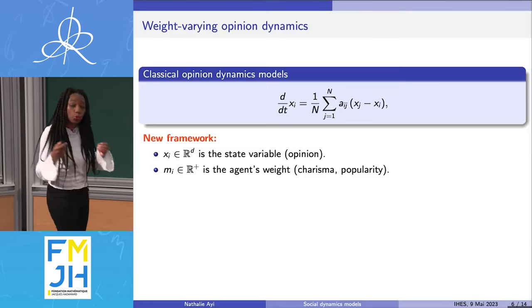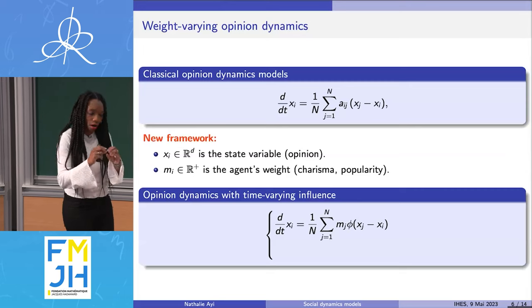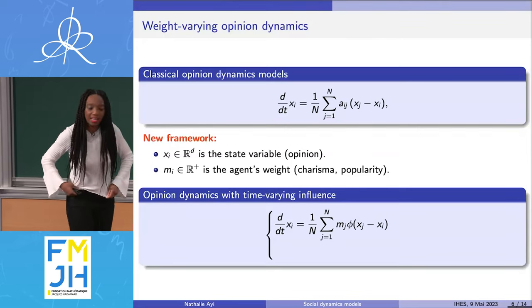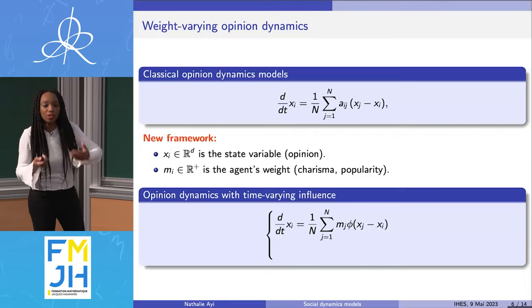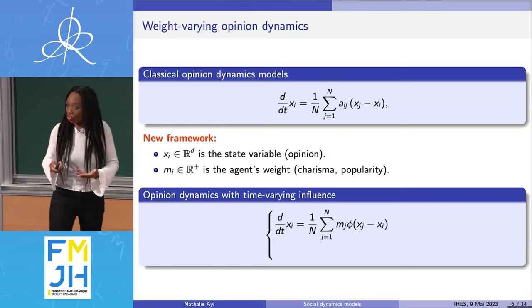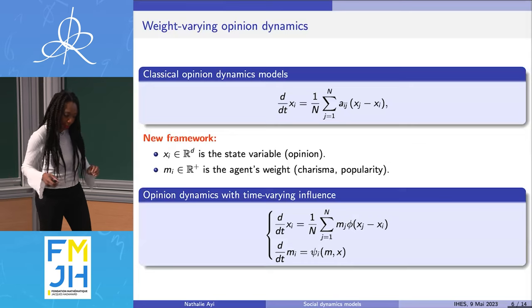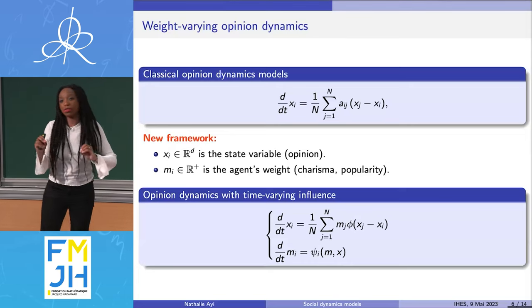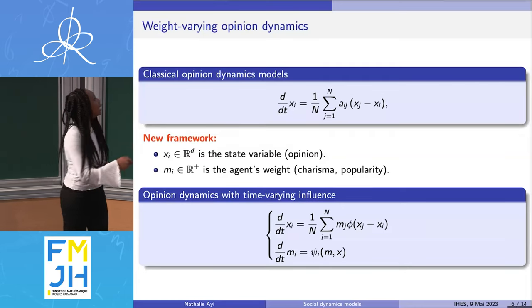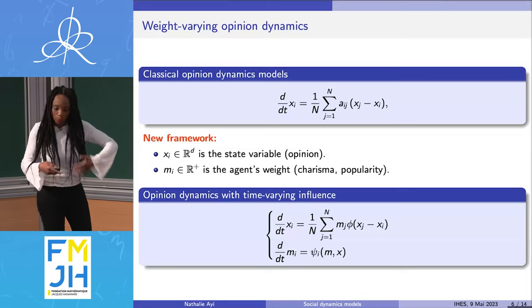The equation we study is the following: the interaction coefficient Aij — the interaction of j on i — is nothing else than j's own weight Mi. This makes sense because the more charismatic and popular someone is, the bigger the impact they have on making the opinion of the other person change. The second equation of our model says that the charisma and popularity of a person is not fixed over time — it can evolve. You can start being popular, then lose popularity, then regain it. It only depends on the opinion and weight of all the other agents.